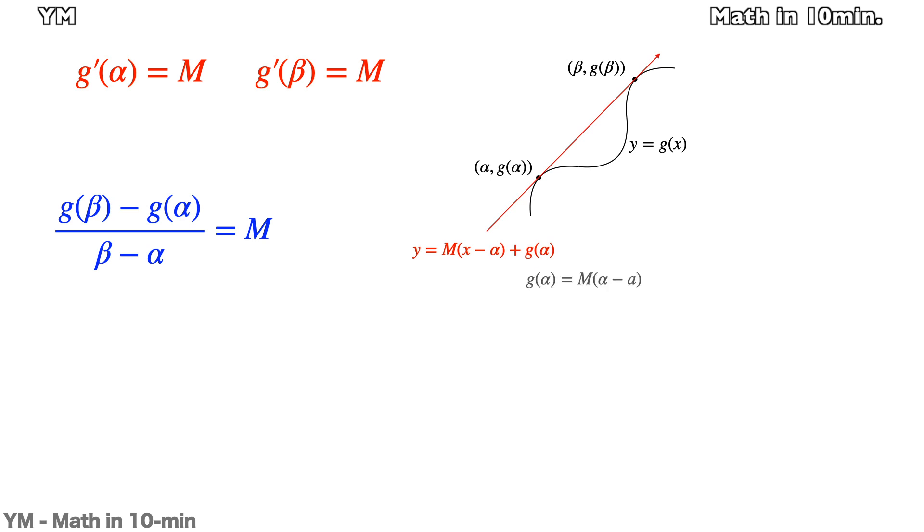Meanwhile, g(α) is M(α - a), so it changes to this. Then it is simplified to this.